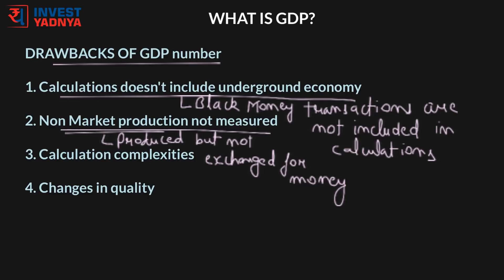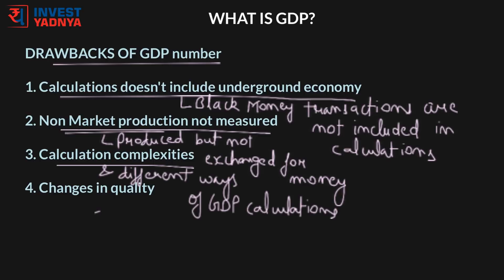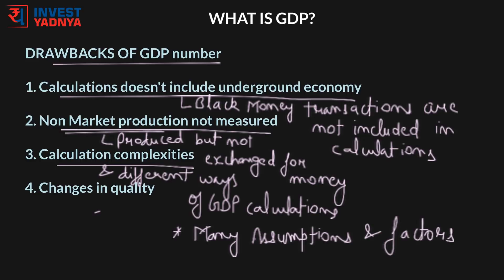A third drawback is calculation complexity and the different ways of calculating GDP. As a concept, GDP was introduced when the market was manufacturing-driven, but now with a majorly services-driven economy, calculating GDP has become a complex mechanism. Statisticians must make many assumptions and consider complex outputs such as financial services, housing services where most houses are self-owned, and government services which are free.